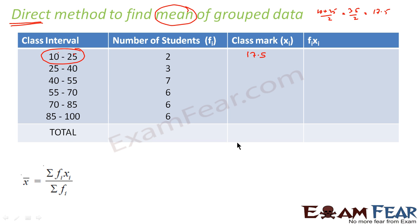Once we have the middle values, that is xi's, we have fi's already given, we can find fi xi and we can use the normal formula of mean that is summation of fi xi by summation of fi. This formula we have already discussed.